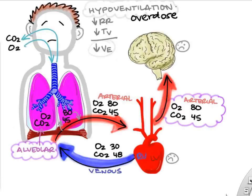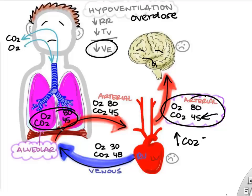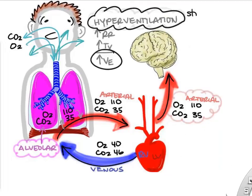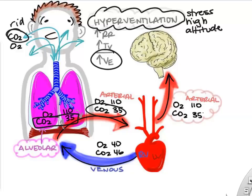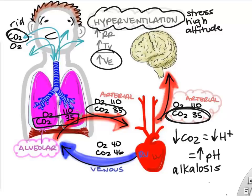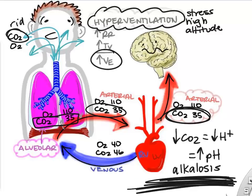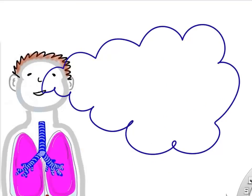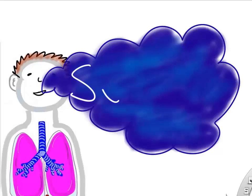If you hypoventilate — say you overdosed on drugs and stopped breathing as much as you should — your CO2 levels go up, which decreases your pH or causes acidosis in your body and bloodstream. If for some reason you hyperventilate from stress or high altitude, your CO2 goes down because you're blowing off more CO2, and as CO2 goes down that's going to cause your pH to go up, which we call alkalosis. When you're at high altitude, remember, you're hyperventilating because of that low oxygen level telling you to breathe.